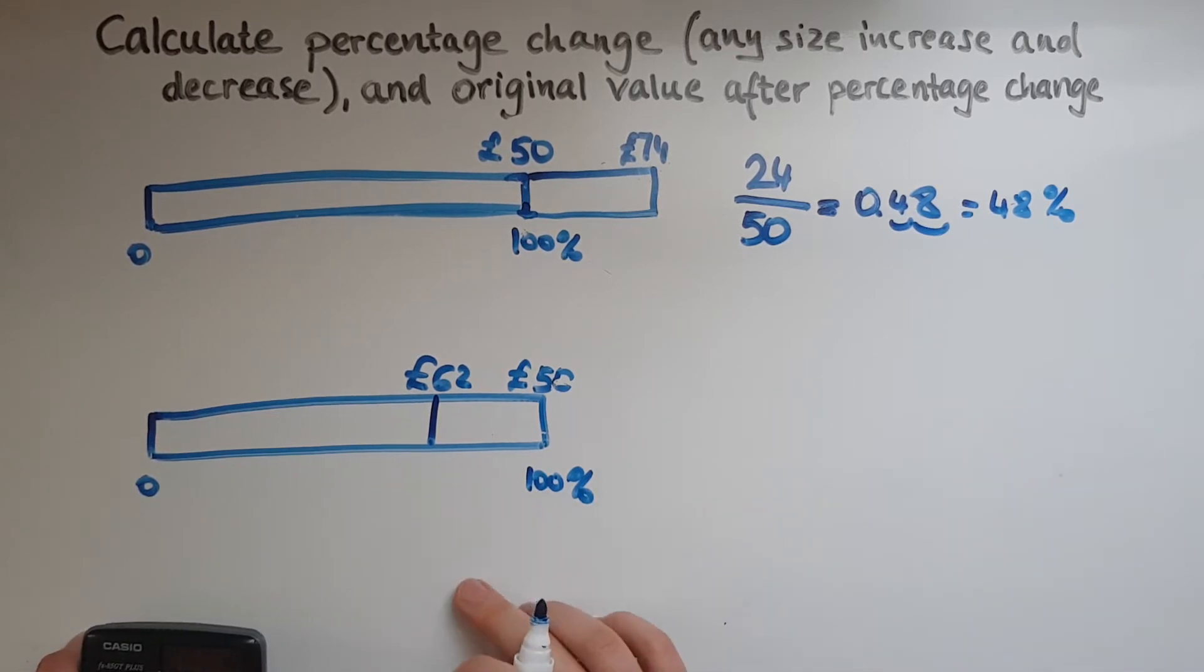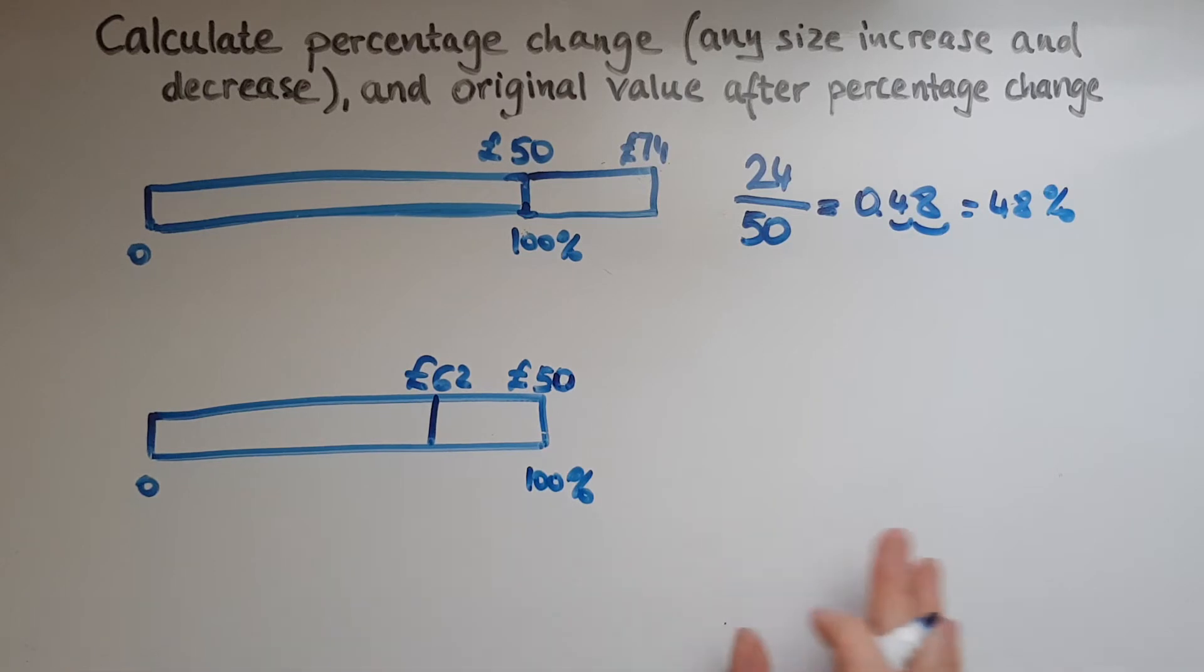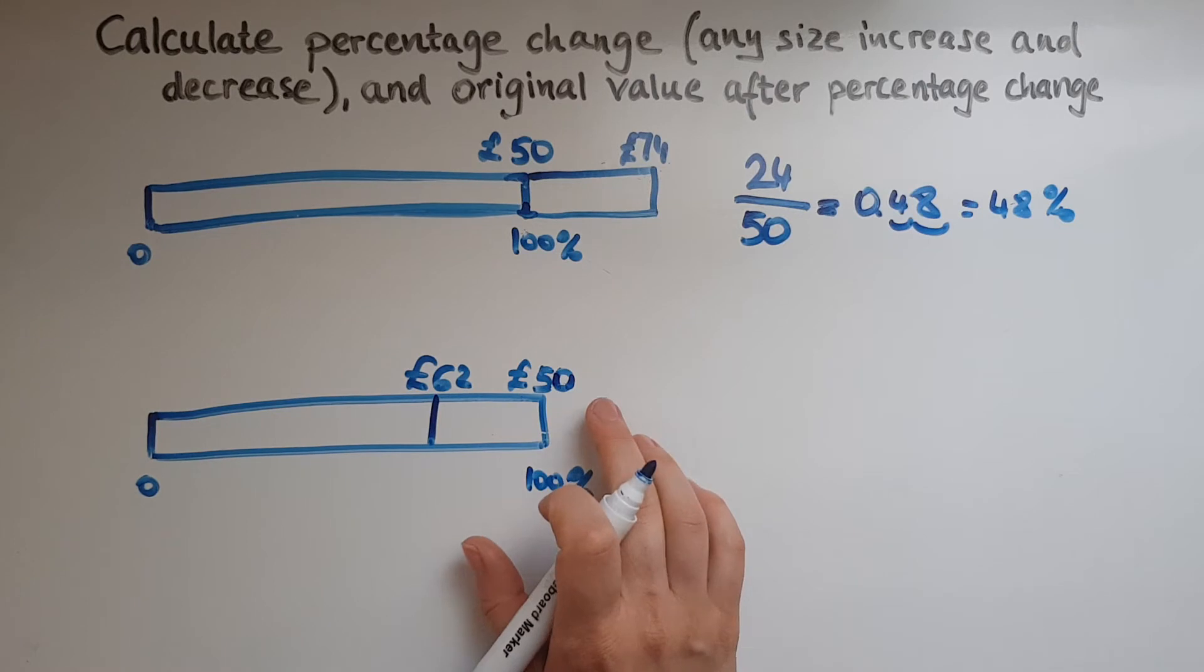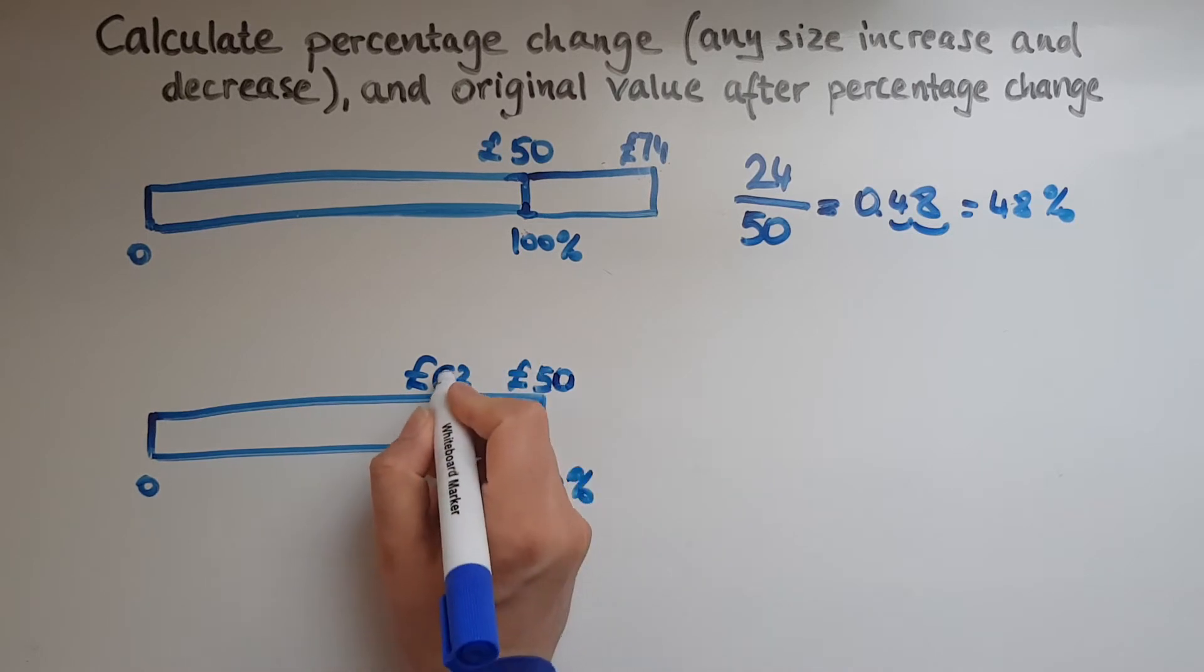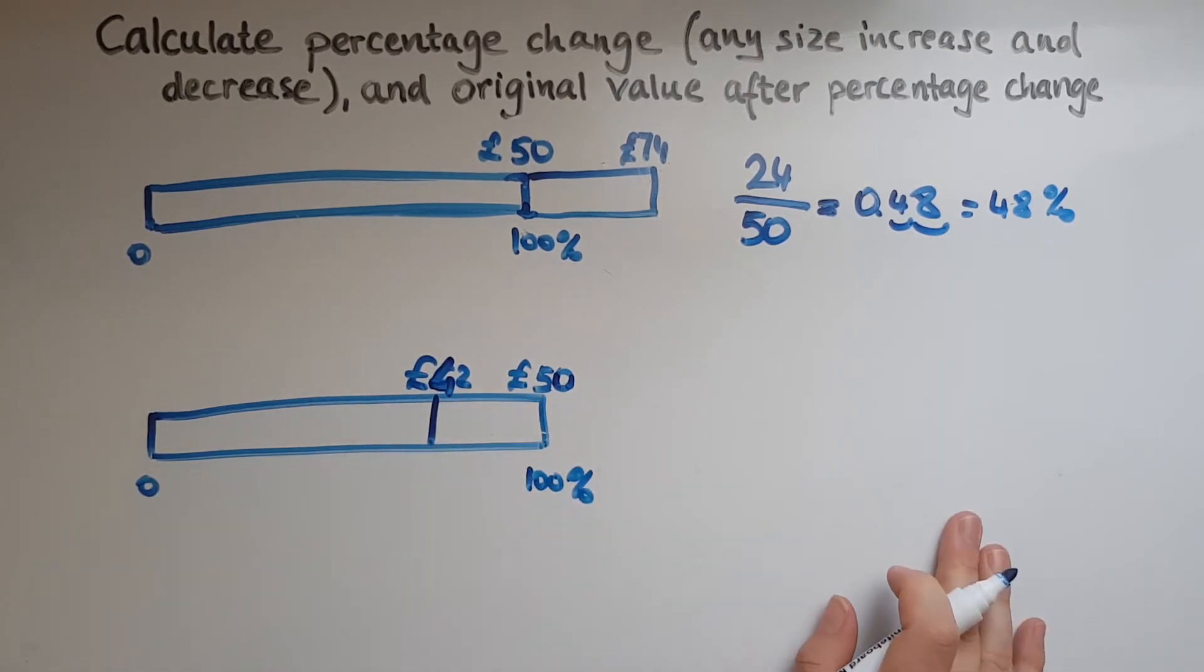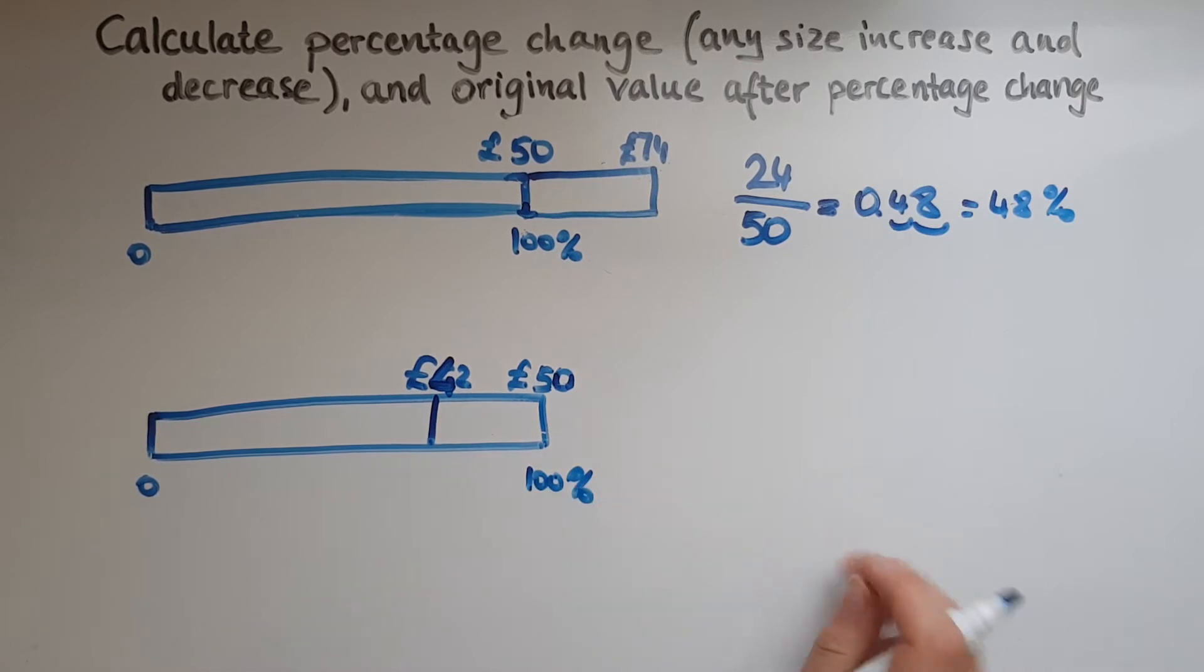Now what's happened is that here we have another scenario. So a pair of shoes costing 50 pounds then it decreased. It went down to 42 pounds. So it's not 50 anymore but it's 42. So what is that percentage change?